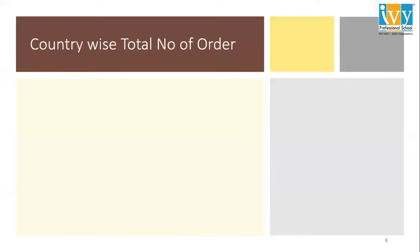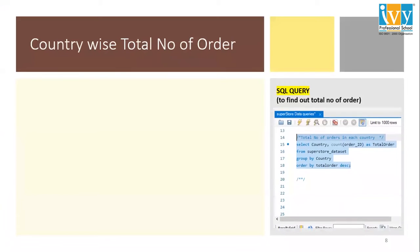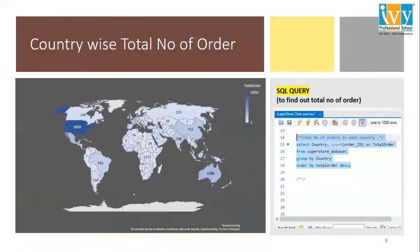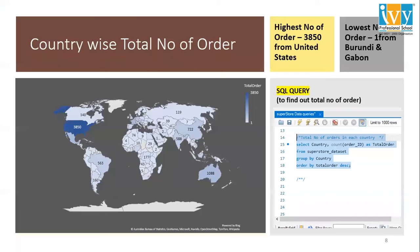Next, we'll look at the country-wise total number of sales. I have mentioned the query here. We have to count the number of order IDs, since that is a unique ID for all orders, then group by country and order by total number of sales. The highest number of orders are from the United States — 3,850. The lowest number of orders are from Burgundy and Gabin — that is one.